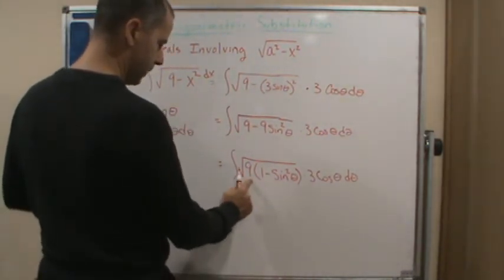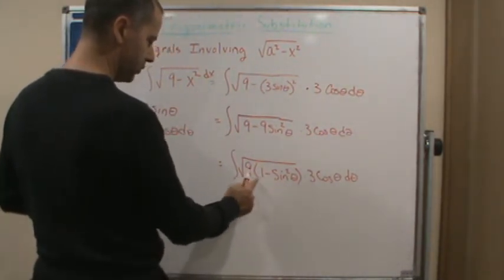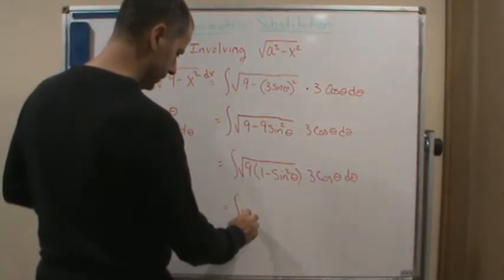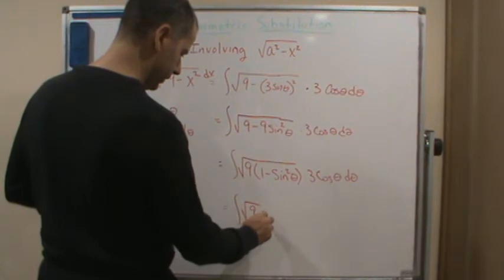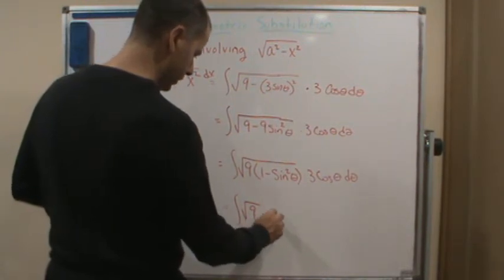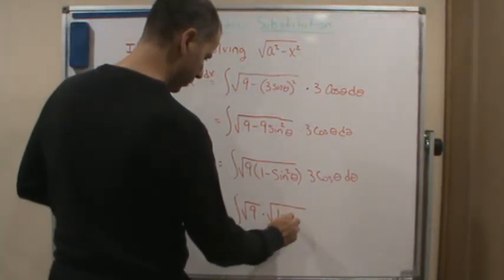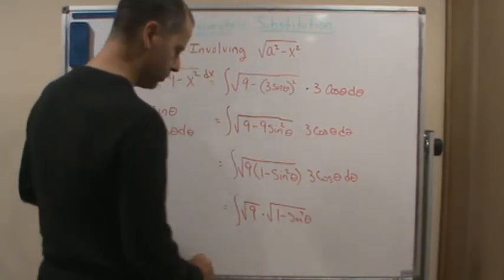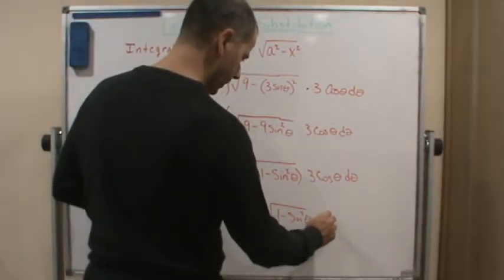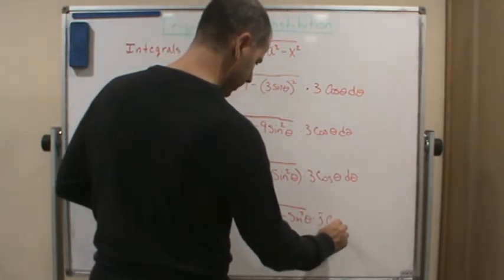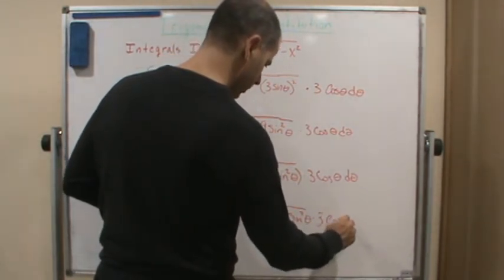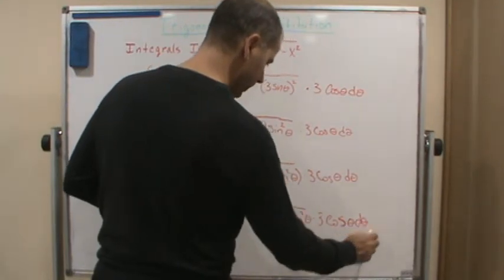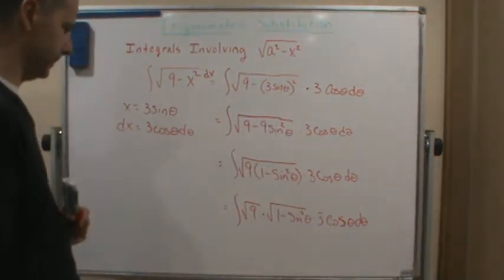Now, I can split this up in the product of 2 radicals. So I can say this is the square root of 9 times the square root of 1 minus sine squared theta times 3 cosine theta d theta.